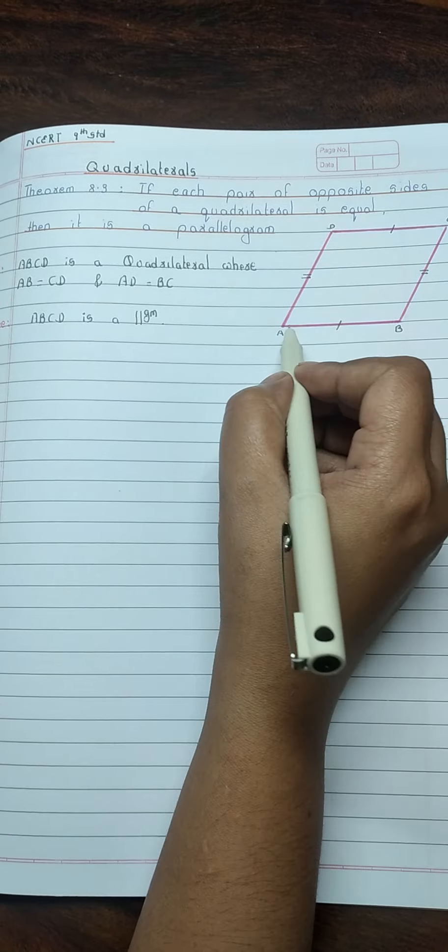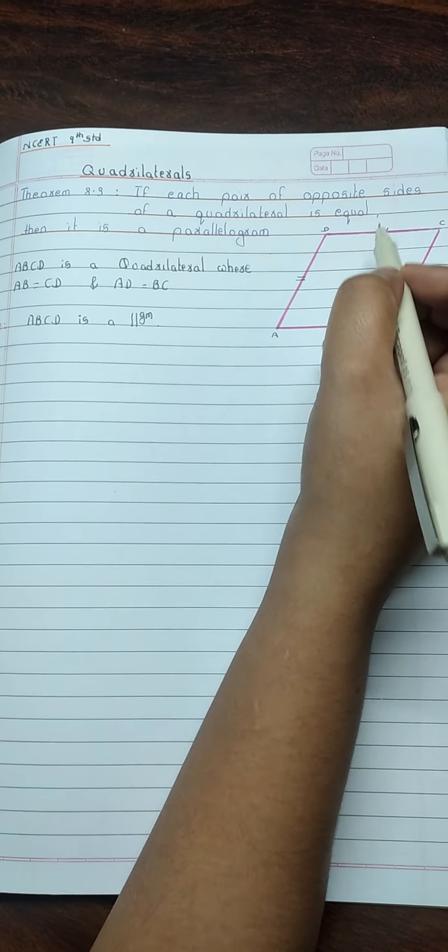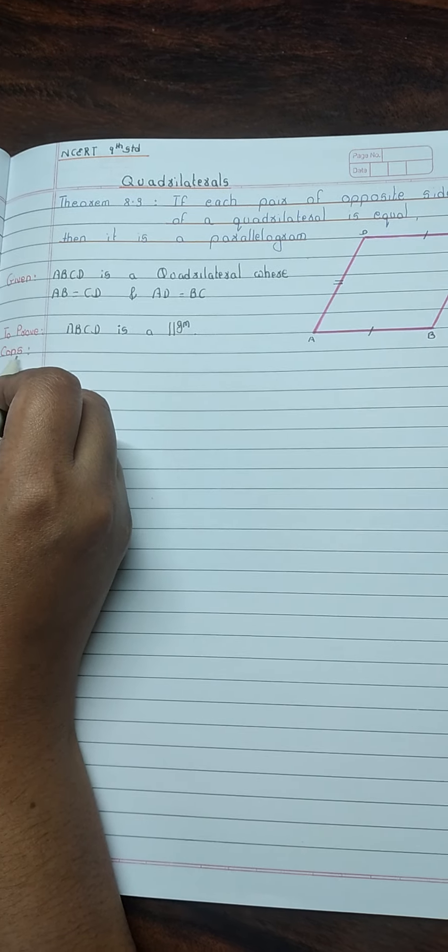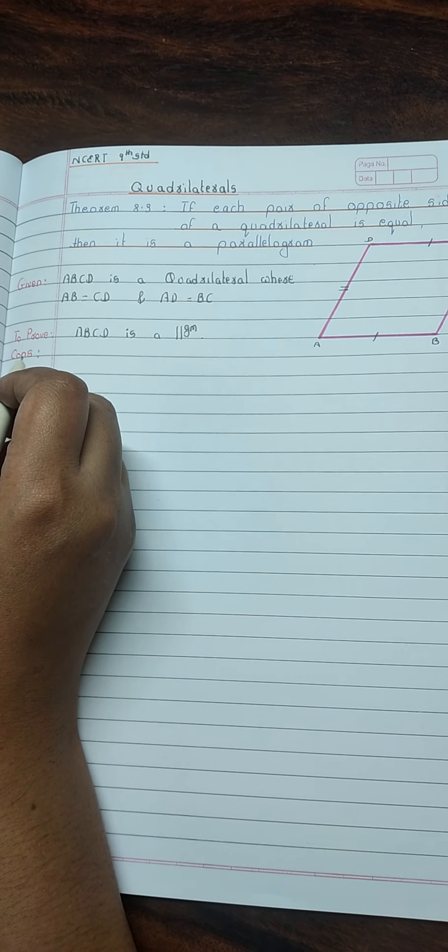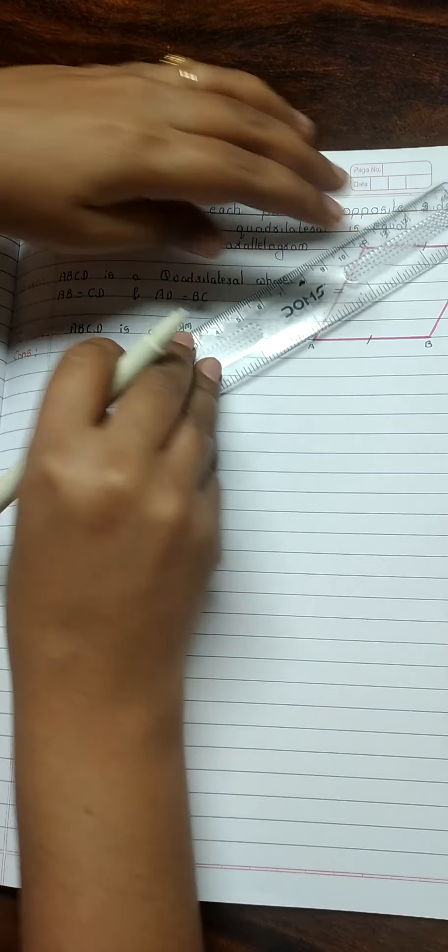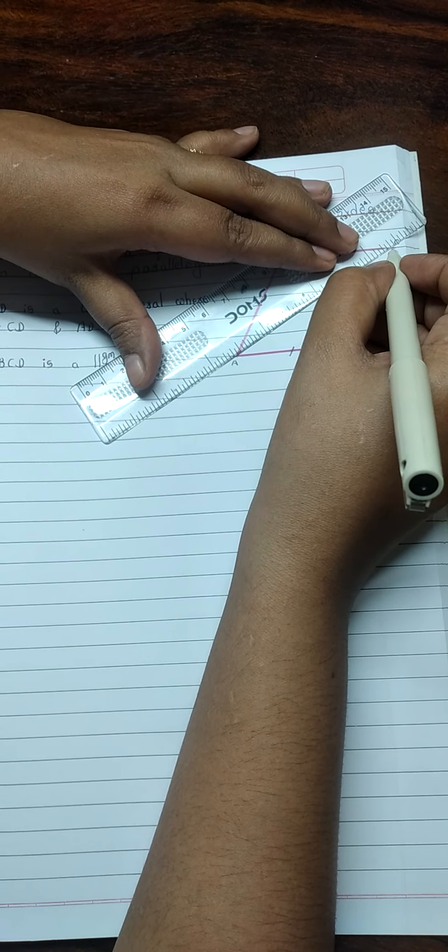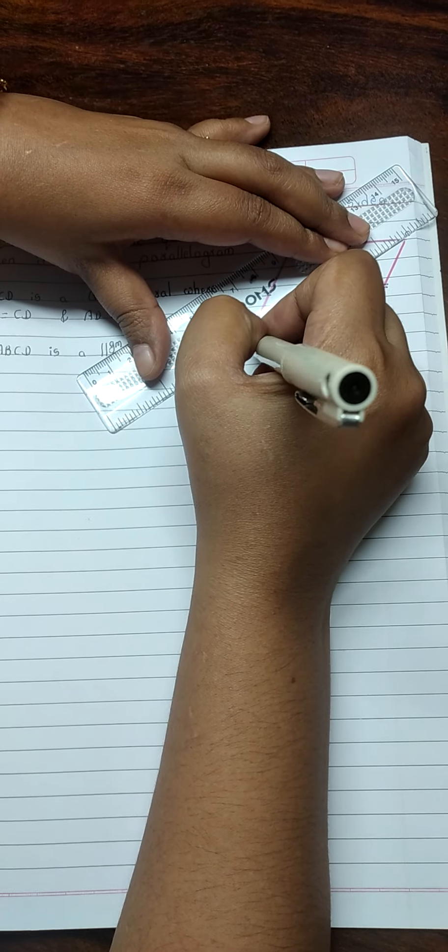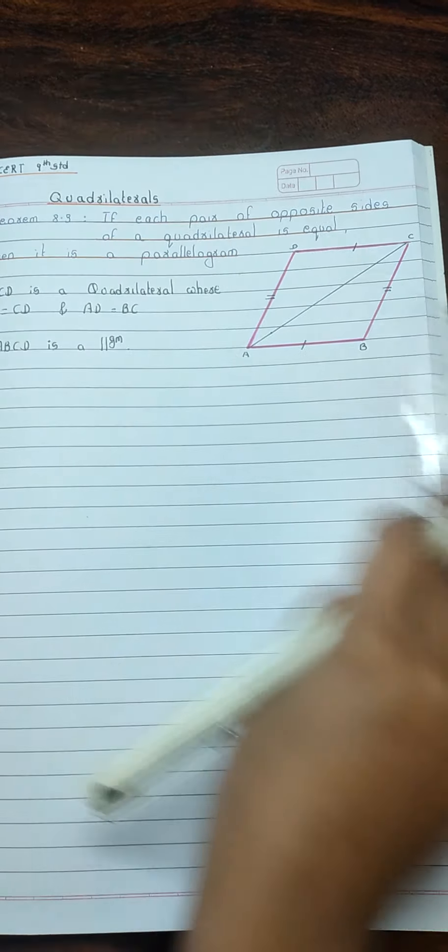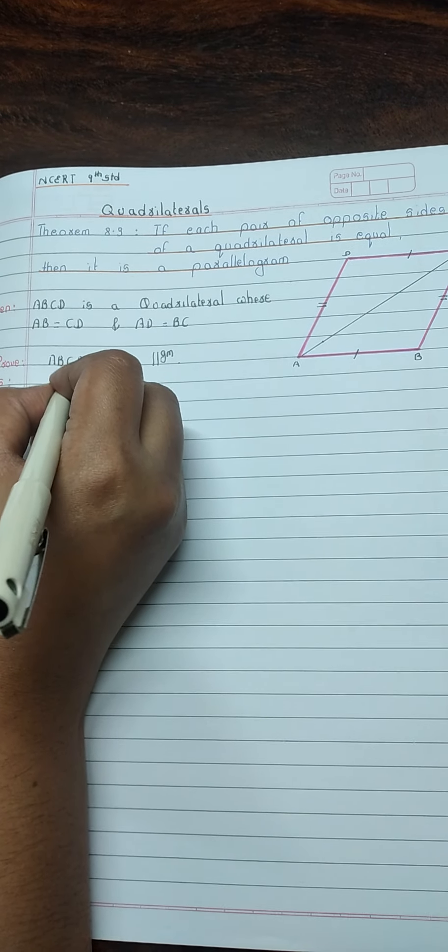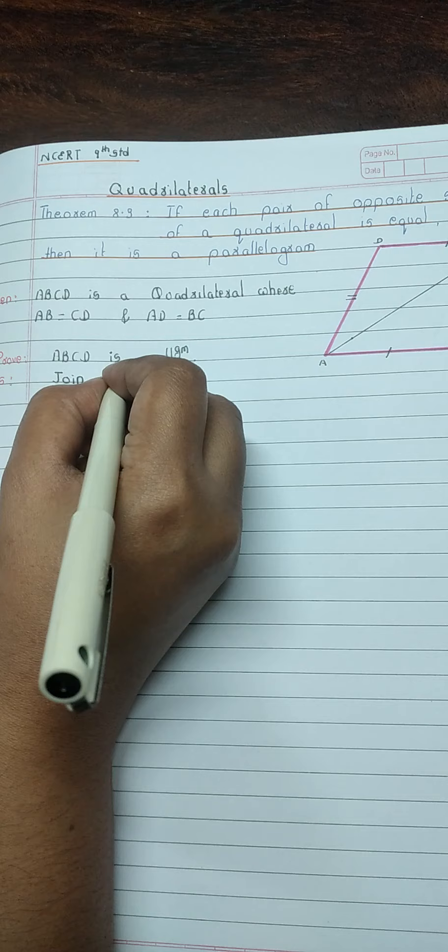We have to prove ABCD is a parallelogram. For this, we have to do construction. That is, join AC.